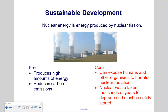Nuclear energy is energy produced by nuclear fission. The pros are that it produces high amounts of energy and reduces carbon emissions. The cons are that it can expose humans and other organisms to harmful nuclear radiation, and nuclear waste takes thousands of years to degrade and must be safely stored. There is also nuclear fusion — the process the Sun uses to form helium from hydrogen — which releases an enormous amount of energy. If scientists could figure out how to harness it, it would provide an almost infinite supply of energy, but this technology is not yet available.